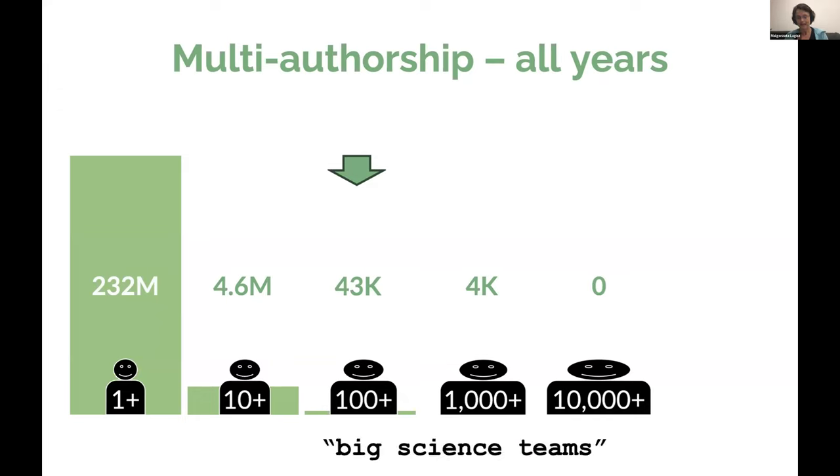I will focus mainly on the subset of works that have at least 100 authors — 100 and more. I will call this subset 'Big Science Team,' since 100 is a pretty big number, so we can say it's a big team.